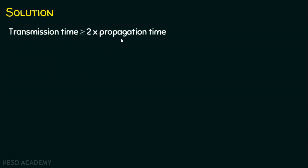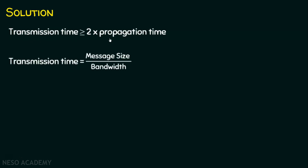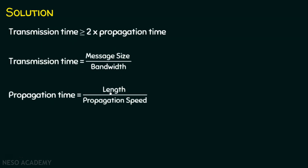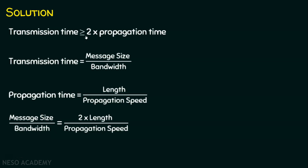Transmission time means transmission delay and propagation time means propagation delay. The transmission time is message size divided by bandwidth, and propagation time is length divided by propagation speed. Replacing these in the inequality, we get: message size / bandwidth ≥ 2 × (length / propagation speed).